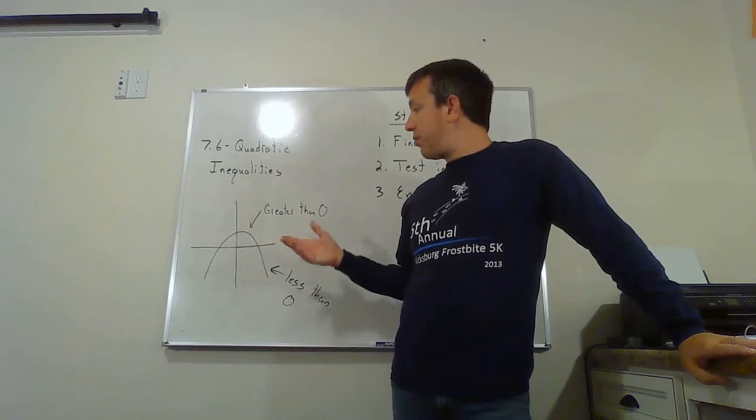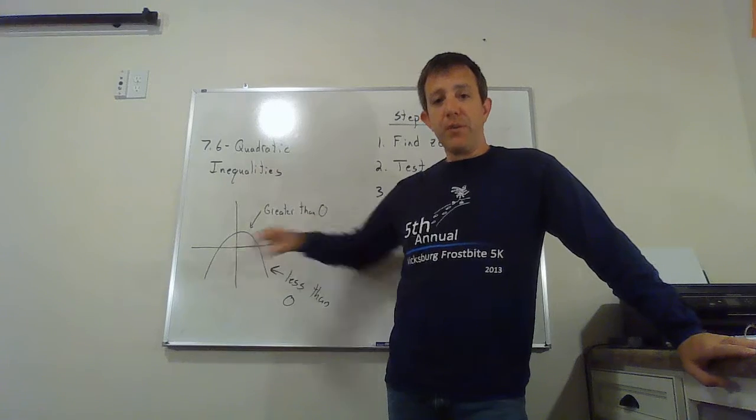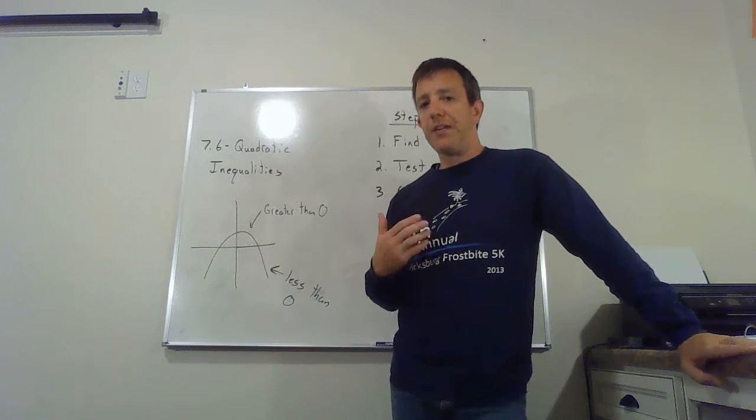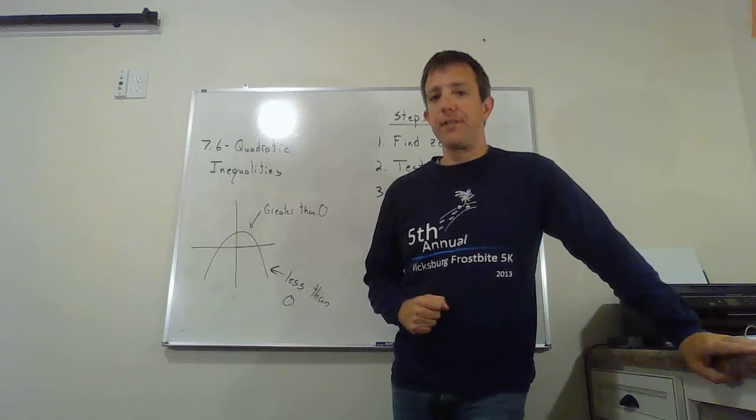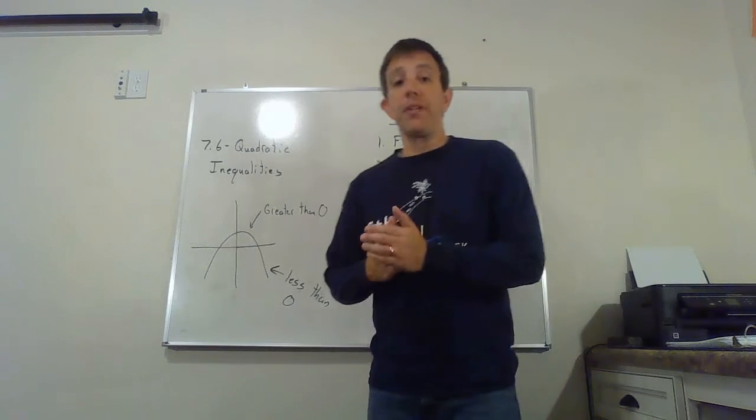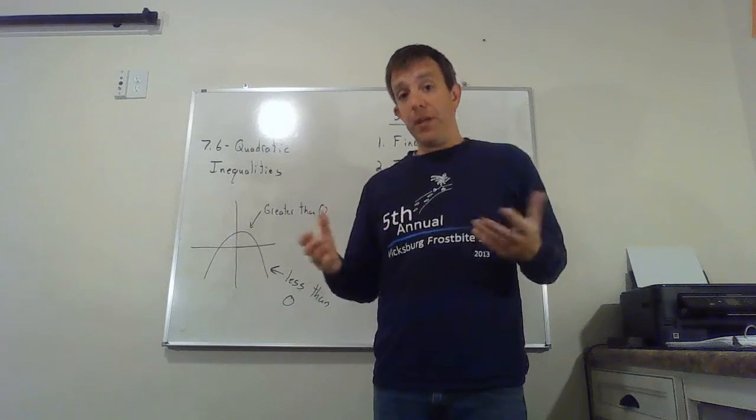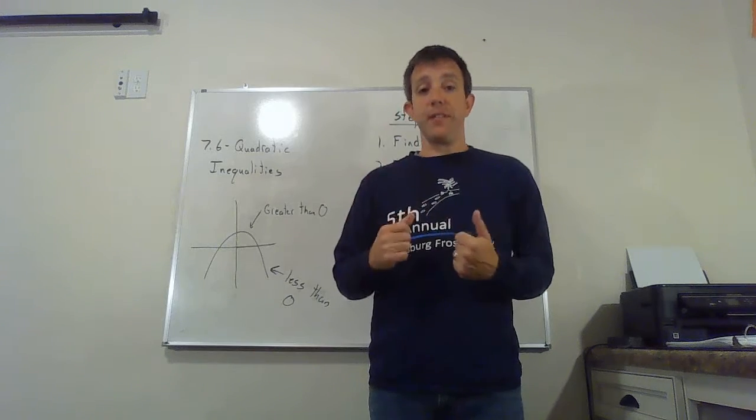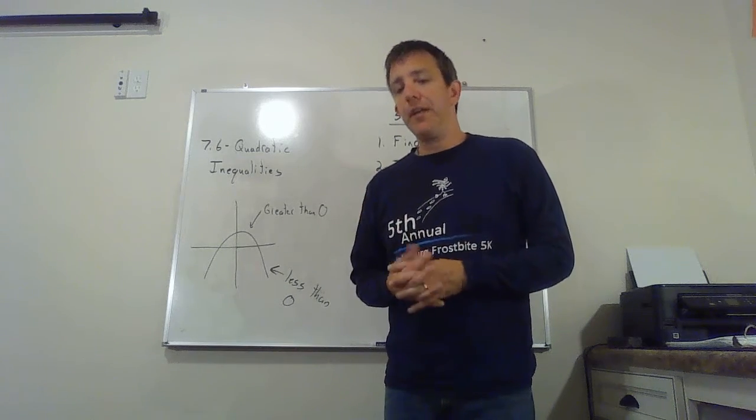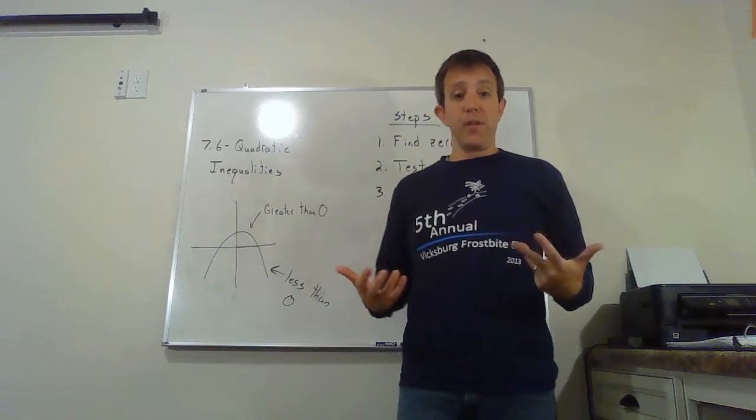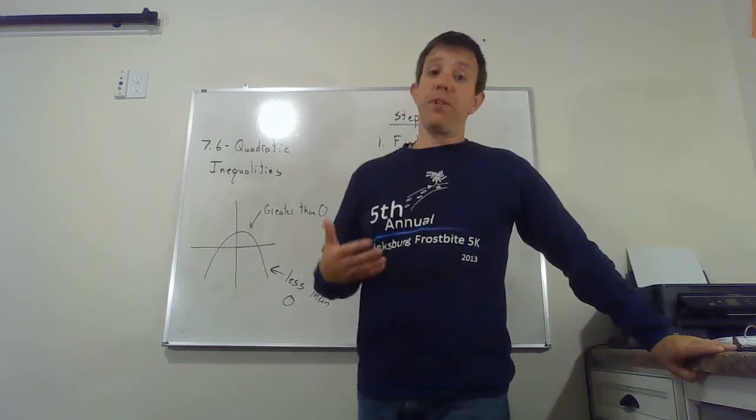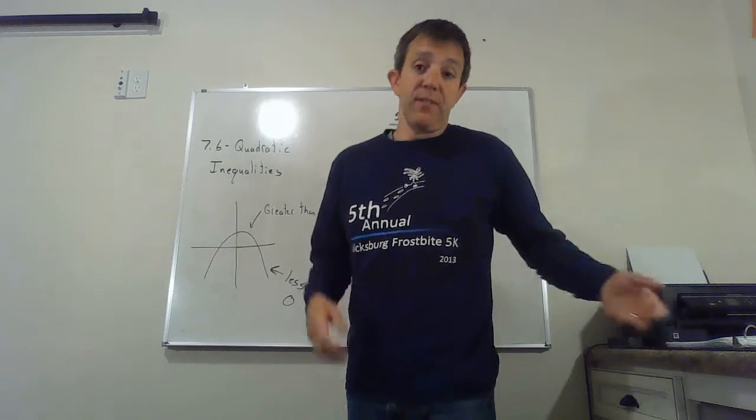Quadratic inequalities are things with a greater than or less than sign instead of an equal sign. When we had an equal sign we solved and just found the zeros. Now we're going to try and find where things are bigger than or less than zero.